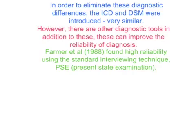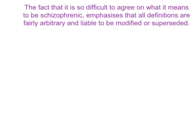Farmer et al. in 1988 found high reliability using the standard interviewing technique known as the PSE, or Present State Examination. However, the fact that different criteria have been used to diagnose schizophrenia makes it difficult to do research in this area. In studies of treatment outcomes, for example, it is difficult to compare data based on individuals who have been diagnosed with schizophrenia using different criteria. The fact that it is so difficult for clinicians to agree precisely on what they mean by the diagnosis of schizophrenia emphasises the point that all definitions are fairly arbitrary and liable to be modified or superseded.